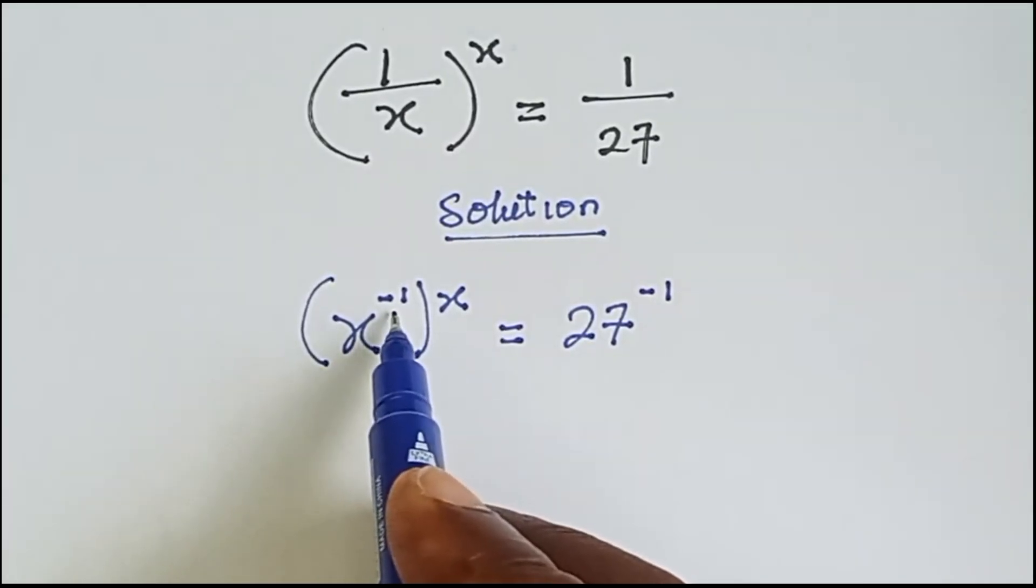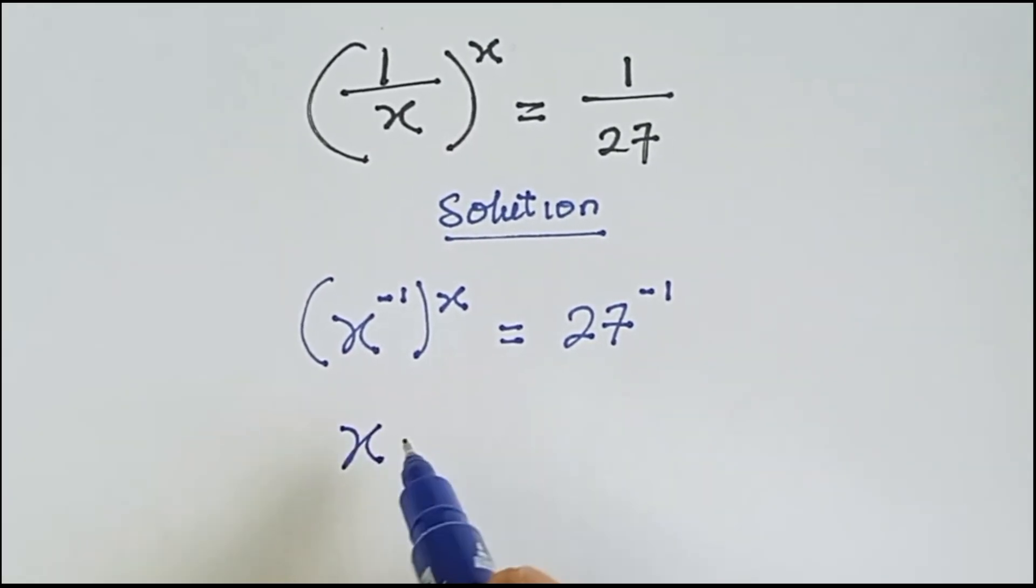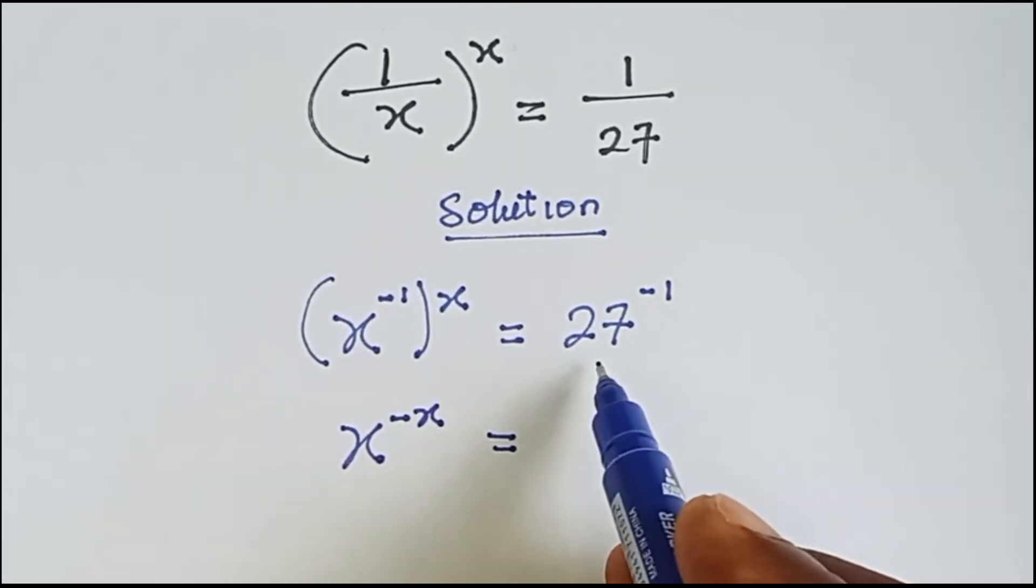So now we can multiply this minus 1 by x. So we have x raised to the power minus x equals to 27.